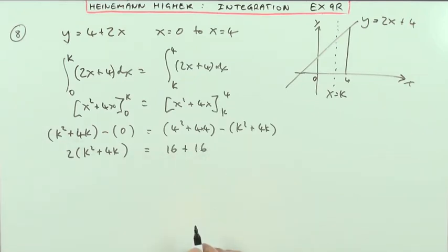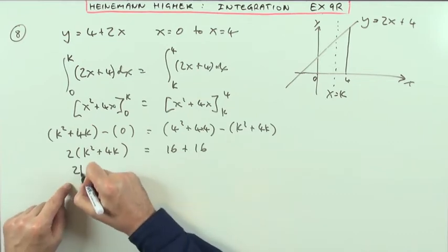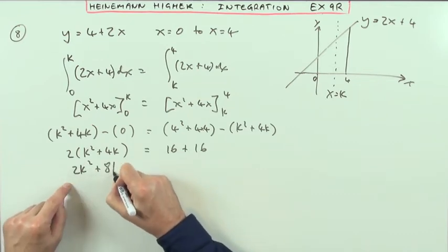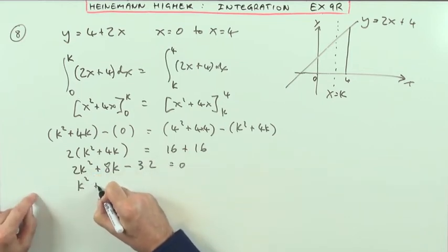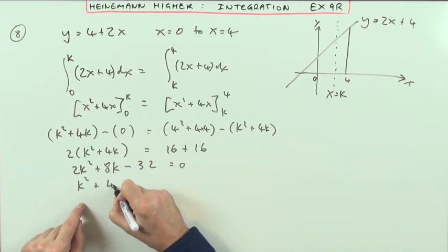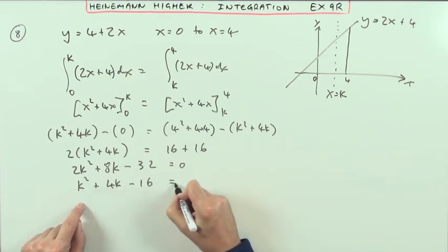And there's a quadratic equation there. Just multiplying it out, I've got 2k squared plus 8k minus 32 equals 0. Let's take out the factor of 2, so k squared plus 4k minus 16 equals 0.